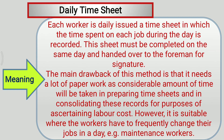We will see the Meaning of Daily Timesheet. Each worker is daily issued a timesheet in which the time spent on each job during the day is recorded. This sheet must be completed on the same day and handed over to the foreman for signature. The main drawback of this method is that it needs a lot of paperwork, as a considerable amount of time will be taken in preparing the timesheet and in consolidating these records for purposes of ascertaining labor cost. However, it is suitable where the workers have to frequently change their jobs in a day — for example, maintenance workers.